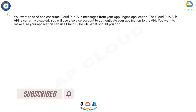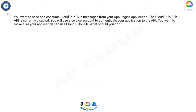Question. You want to send and consume Cloud Pub/Sub messages from your App Engine application. The Cloud Pub/Sub API is currently disabled. You will use a service account to authenticate your application to the API. You want to make sure your application can use Cloud Pub/Sub. What should you do?